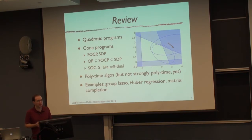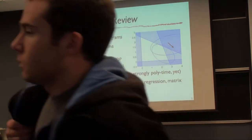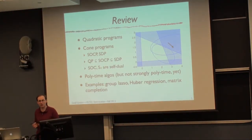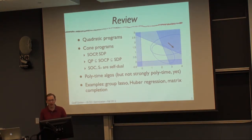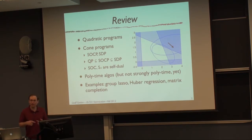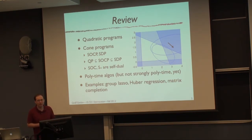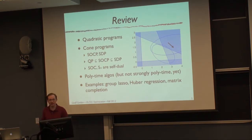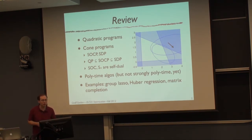We talked about relationships between these different types of problems. Quadratic programs are a subset of second-order cone programs — you can easily turn any quadratic program into an equivalent second-order cone program. And second-order cone programs are a subset of semi-definite programs. So these are increasing levels of expressivity and also increasing levels of difficulty to solve, though there are polynomial-time algorithms for all of them — poly in the size of the representation and in the accuracy parameter, one over epsilon.